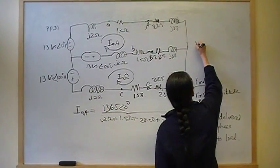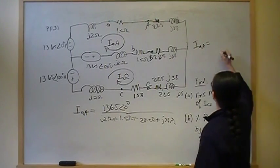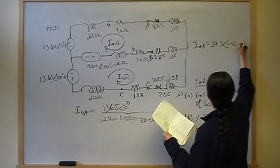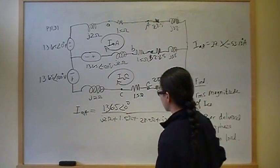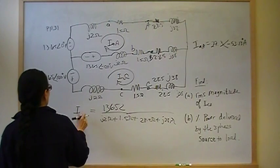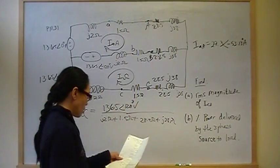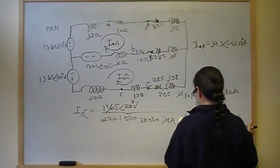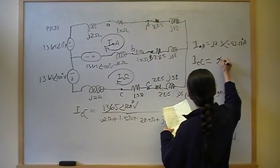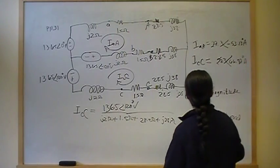Do the same thing for line current ICC, except for this is angle 120. That will give you ICC is 27.3 angle 66.87 degrees amps.